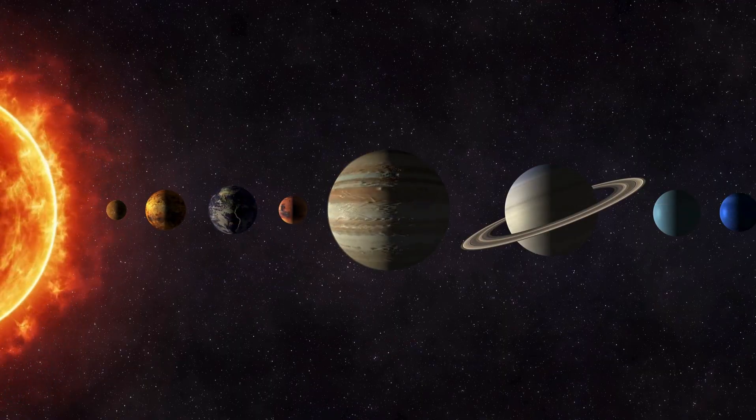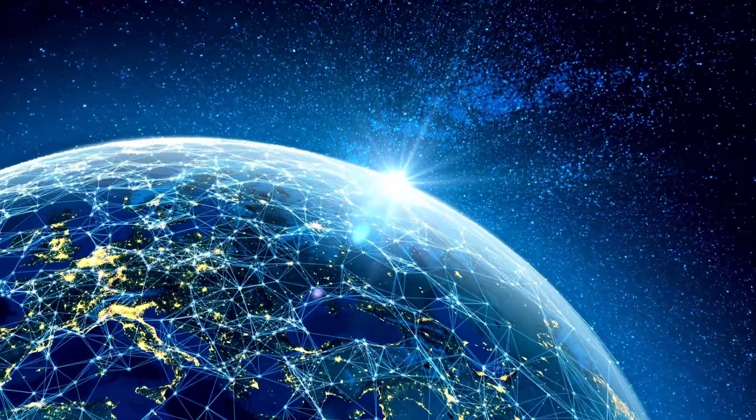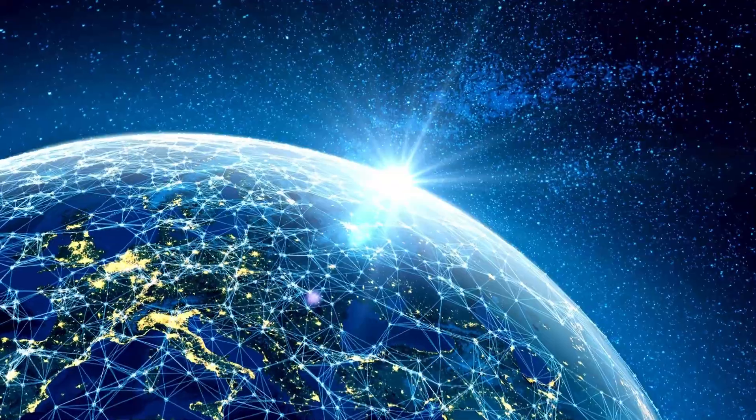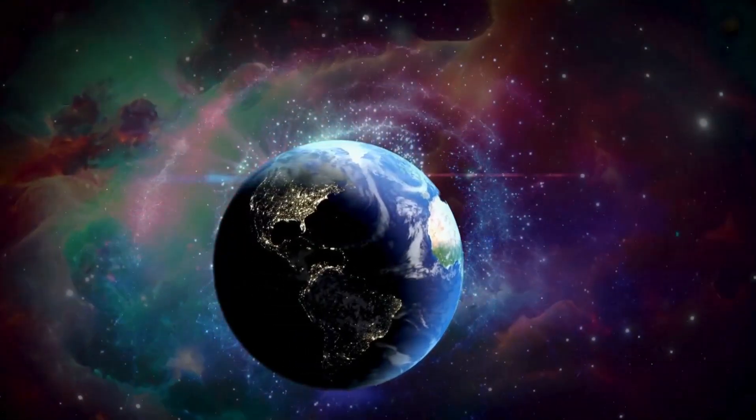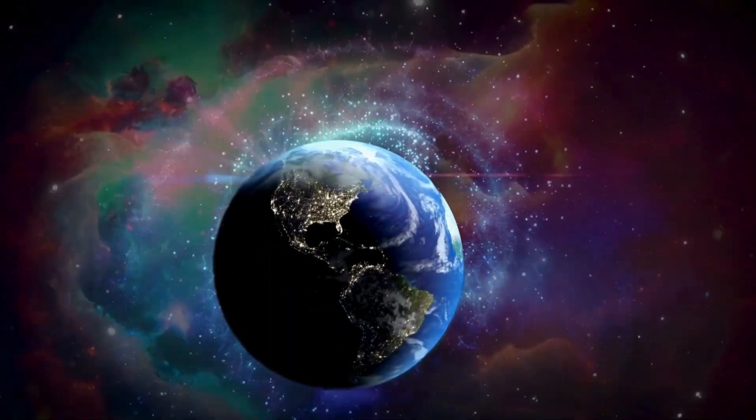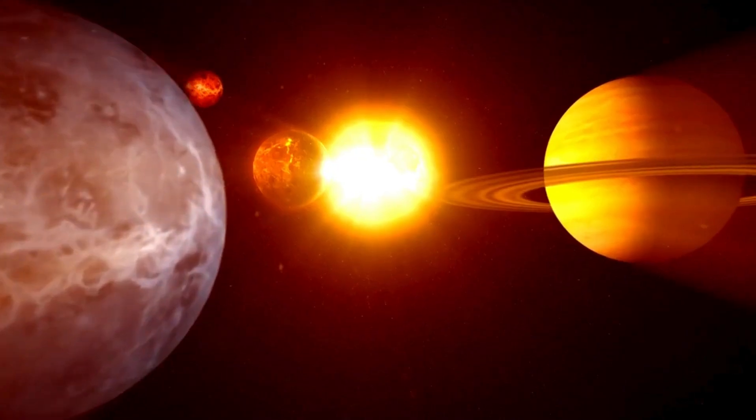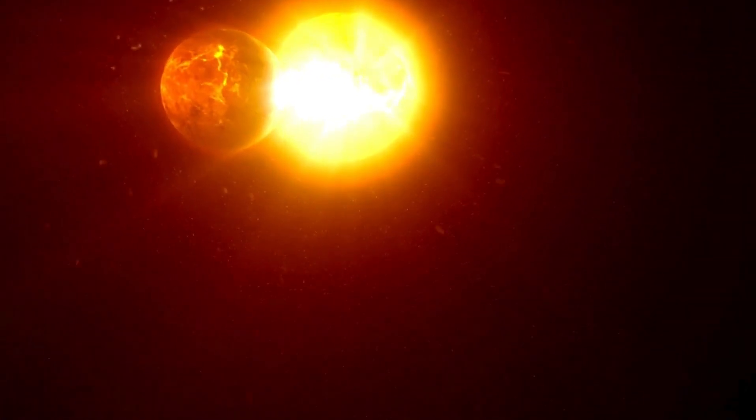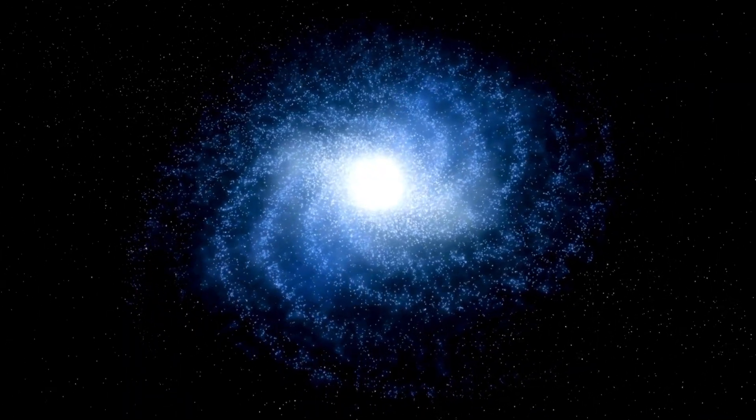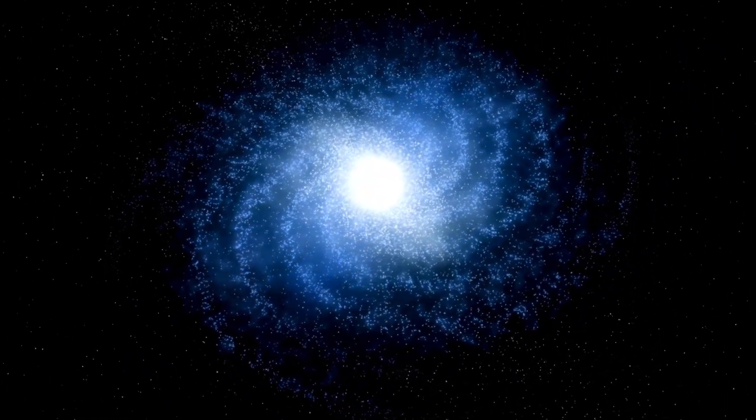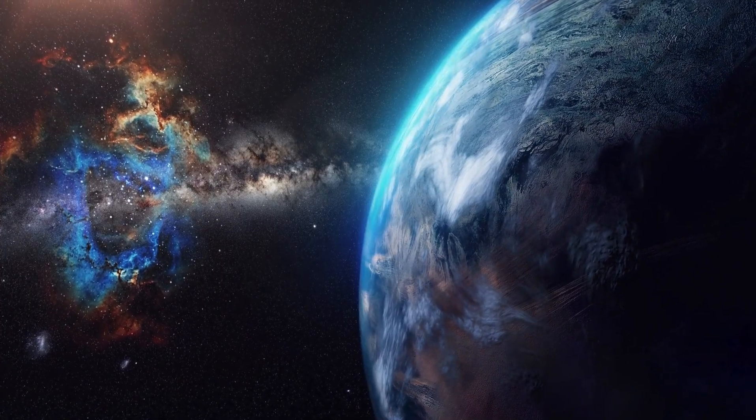Neptune, previously shooed away as a remote, chilly ice giant circling quietly at the periphery of our sun's realm, has unexpectedly become a mystery planet. Historically, this eighth planet from the sun had been viewed through a narrow prism: a huge, cold world illuminated by methane-rich blue light, veiled in cloud-wreathed winds, and containing a dense core hidden beneath layers of stagnant gases. A planetary enigma perhaps, but one that was believed to be well explicated in theory.